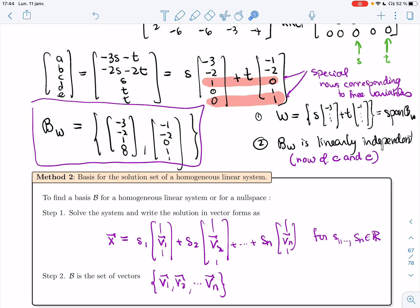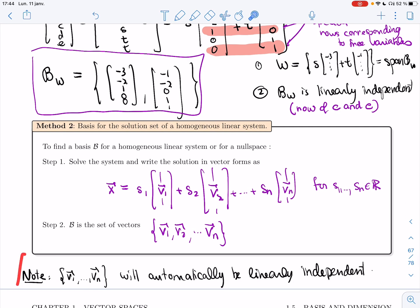All right, so for each vector, you have one row where that vector has a 1 and every other vector will have a 0. And that's going to help you reduce and show that it's linearly independent.